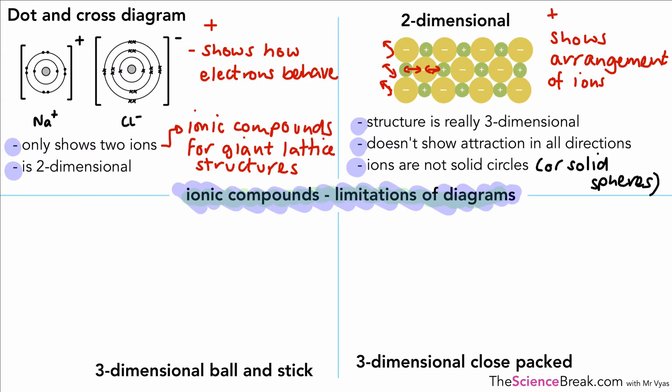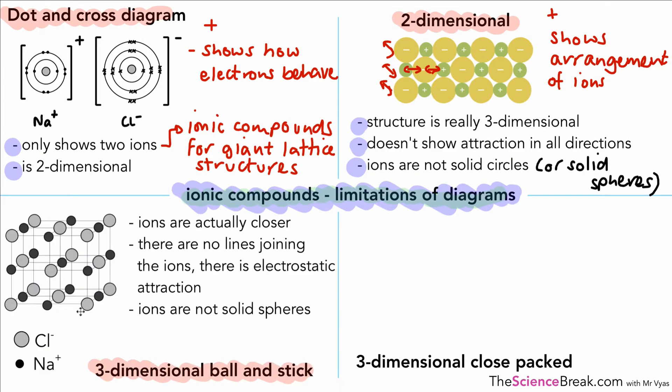We've got the dot and cross diagram and the two-dimensional diagram. We can now look at what we call a three-dimensional ball and stick diagram. This is getting closer to what ionic compounds actually look like in real life. The great positive about this is that it shows a 3D structure, not just a 2D structure, so you can see how the attraction is left and right, up and down, and also backwards and forwards as well.